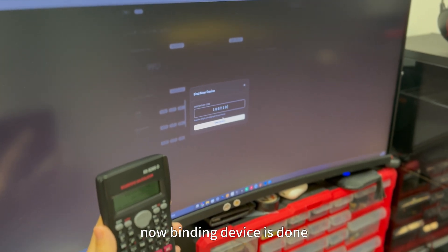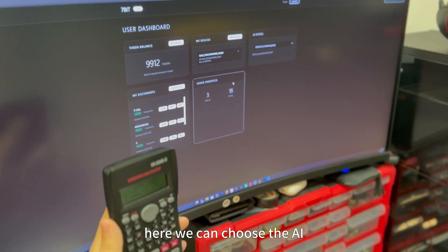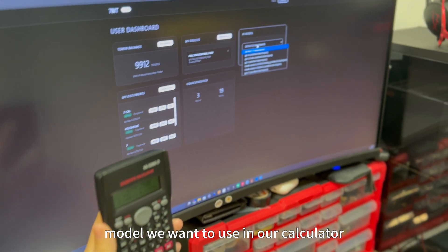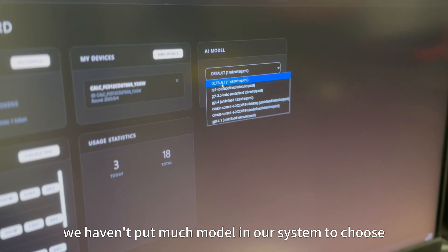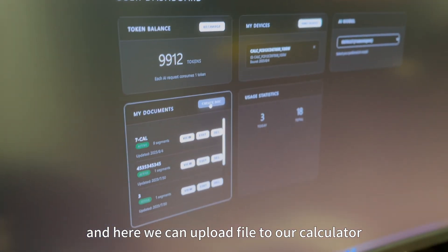Click on it. Now binding device is done. Here we can choose the AI model we want to use in our calculator. In test period, we haven't put much model in our system to choose. And here we can upload file to our calculator.